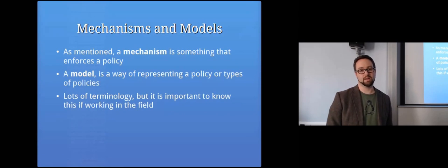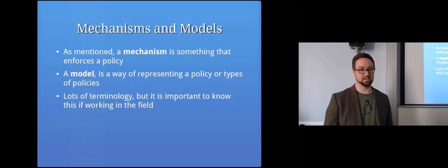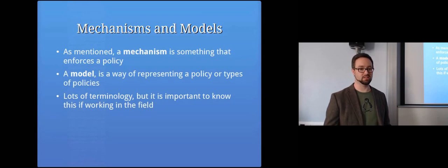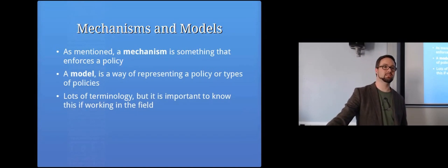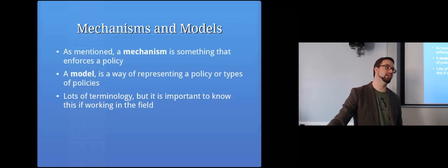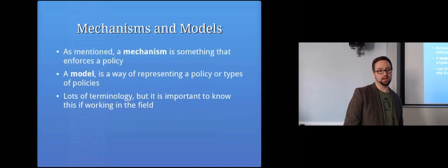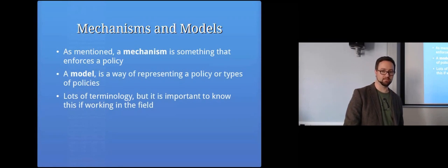A mechanism is something that enforces a policy — for example, a firewall is a mechanism. A model is a way of representing a policy or types of policies — a way of expressing the kinds of rules. The access control matrix is an example of a security model. This terminology is especially important if you end up working on the defensive side of security.